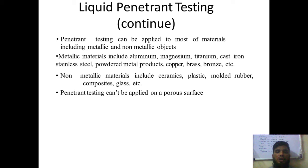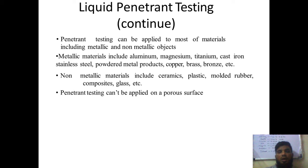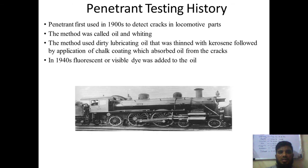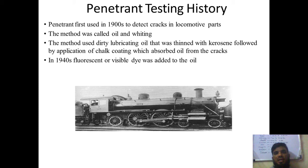Penetrant testing cannot be used on porous materials. For example, materials like glass fibers or banana fibers have a lot of porosity and those materials cannot be studied using this testing. Historically, penetrant testing was first used in 1900 to detect cracks in locomotive parts.